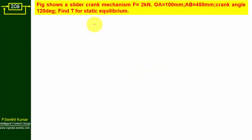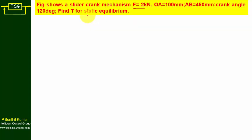The figure shows a slider crank mechanism. We need to draw the figure. F is equal to 2 kilo Newton force acting on slider. OA crank length is 100 mm, AB connecting rod length is 450 mm, crank angle is 120 degrees. Our aim is to find torque for static equilibrium, so first we need to draw the slider crank mechanism.